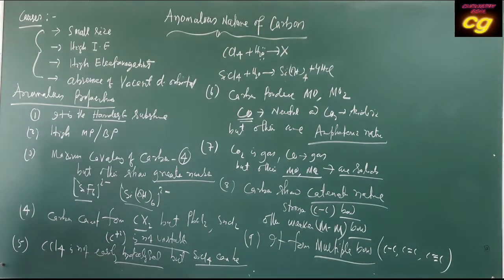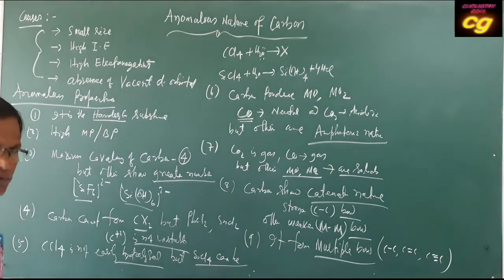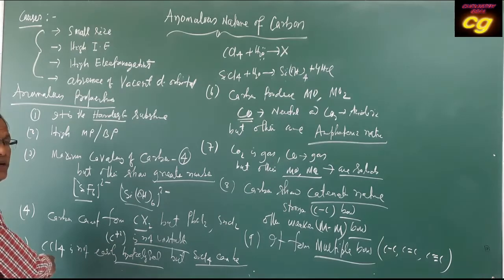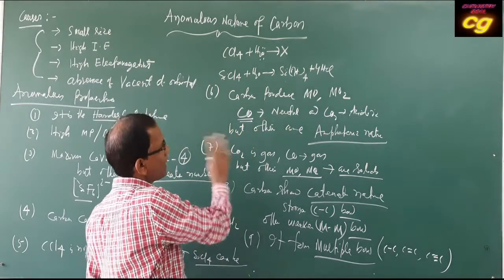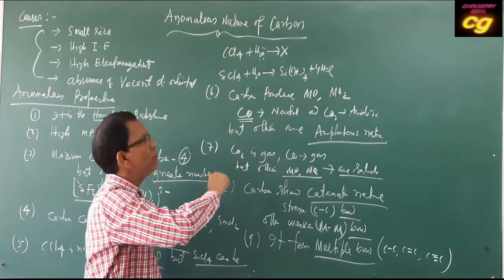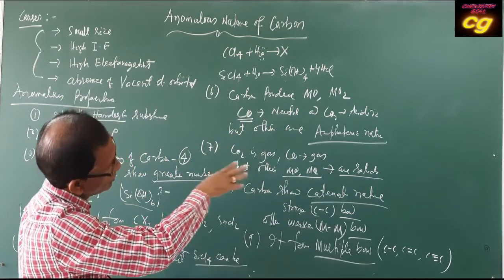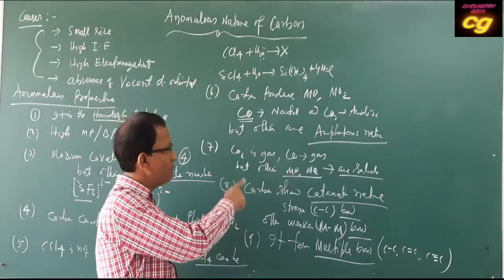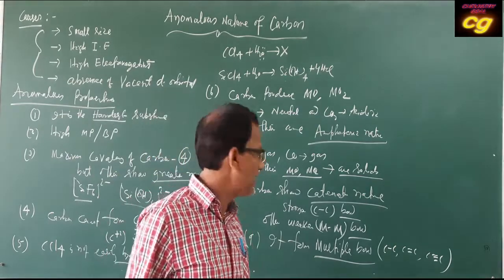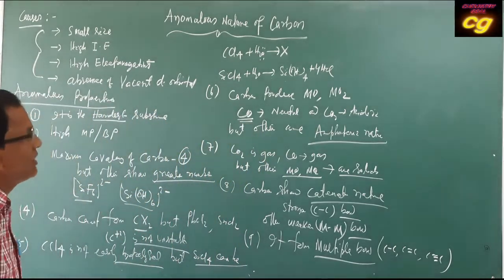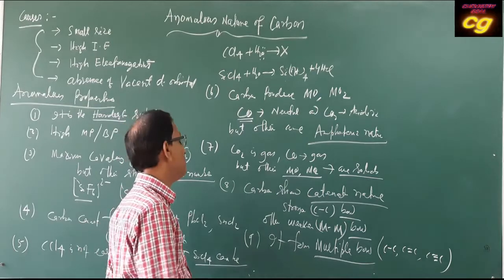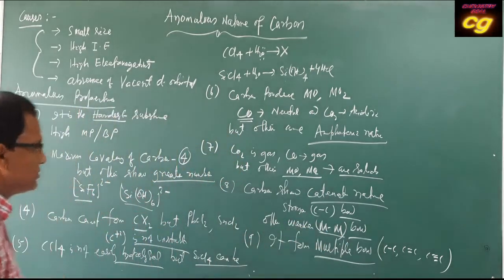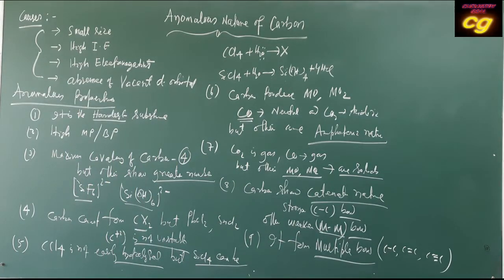To summarize: carbon tetrachloride is not easily hydrolyzed, but silicon tetrachloride can be easily hydrolyzed because carbon has no vacant d orbitals. Carbon produces monoxide and dioxide, all in gaseous state. Carbon monoxide is neutral while carbon dioxide is acidic. Other dioxides of Group 14 elements show amphoteric character — they can react with both acid and base. Carbon also shows catenation, which is not shown by other elements because the M–M bond is weaker for them.